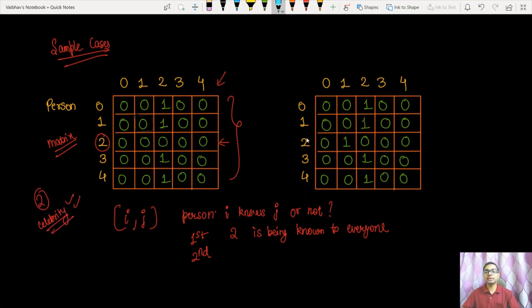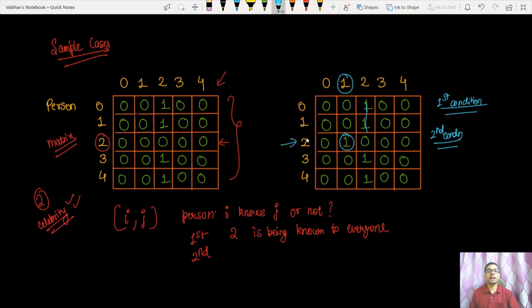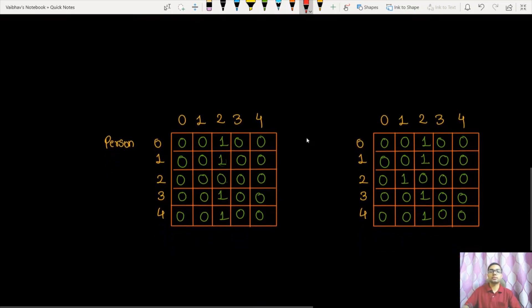Moving on to the second case — everything is similar except that person 2 knows person 1. The first condition is still satisfied as all persons know person 2, but the second condition requires the celebrity to know no other person. Since person 2 knows person 1, person 2 cannot be a celebrity for this case, and thus we return -1 as there is no celebrity present in this party.